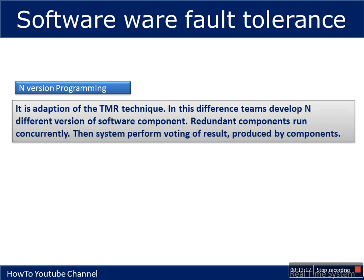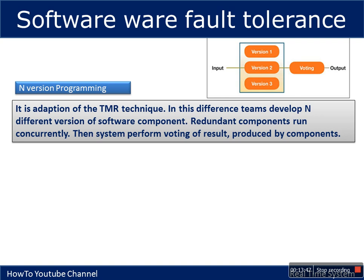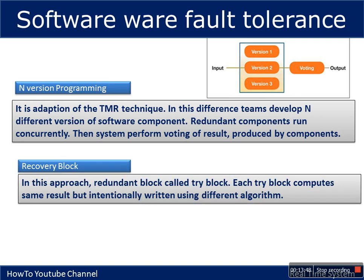For software fault tolerance there are several techniques; we will cover two. The first is N-version programming: for every module, different teams work on that module independently and produce different implementations for the same task. When a task has to be completed, all those modules are used and a voting process decides the correctness of the system's result.